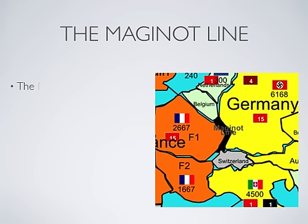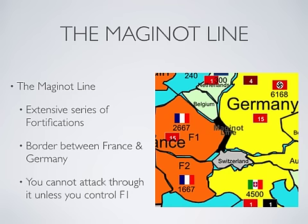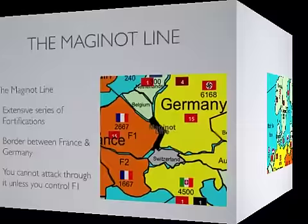The Maginot Line is an impenetrable series of fortifications that prevents anyone from making a frontal assault on France. Its fortifications include pillboxes, machine gun nests, cannons, underground railroads, and troop barracks. France can attack from it, but you cannot attack through it unless you control F1.